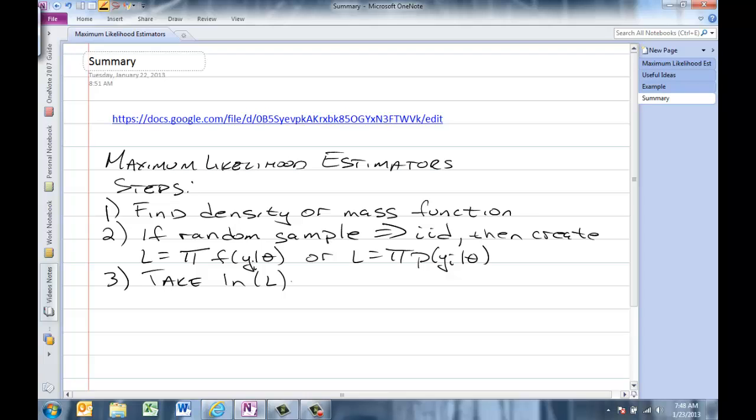And if this log likelihood function is a continuous function of the parameter, take the derivative of the log likelihood function with respect to the parameter and set it equal to zero.